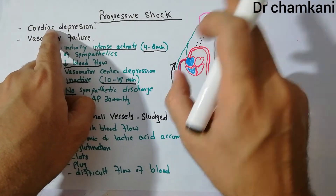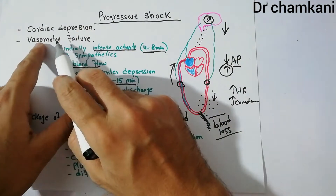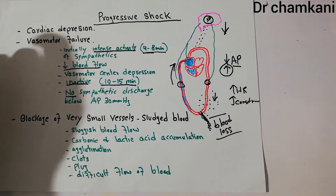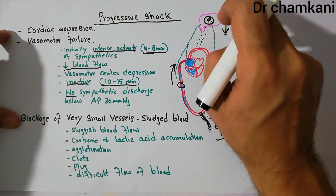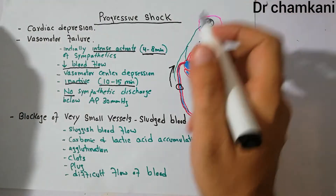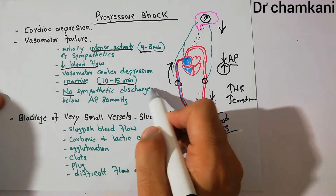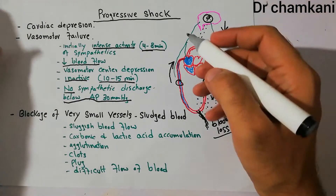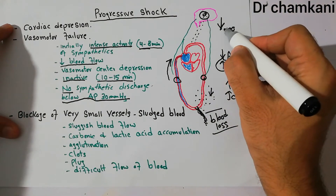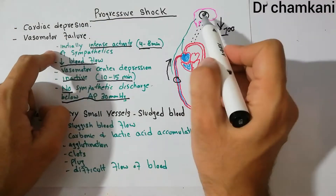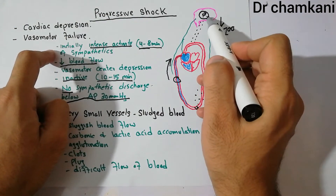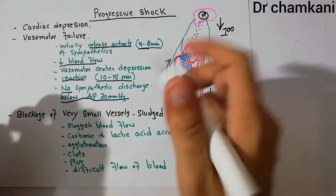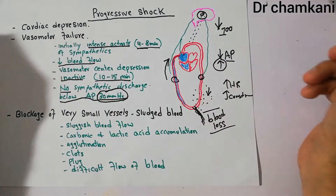Cardiac depression was one factor leading to progressive shock, and vasomotor failure — which occurs with continuous decreased blood flow especially due to blood loss, hemorrhage, or fluid loss — is another. The good thing is that vasomotor failure mostly occurs only below an arterial pressure of 30 mmHg. Normally arterial pressure is around 100 mmHg, but the vasomotor center in the brain becomes depressed and inactive only when arterial pressure has fallen so low that it is below 30 mmHg.